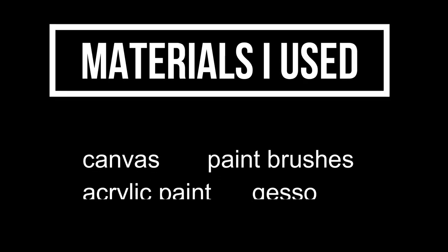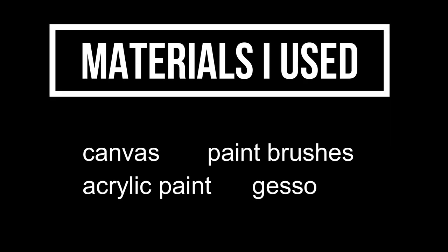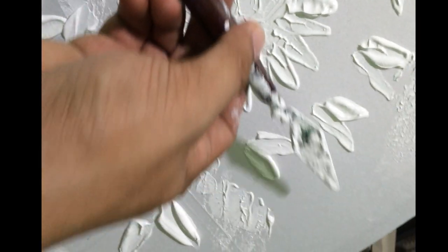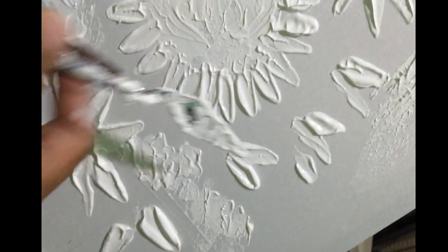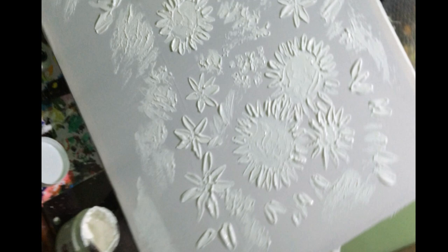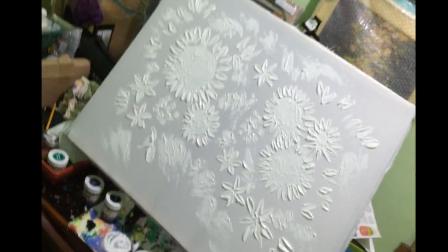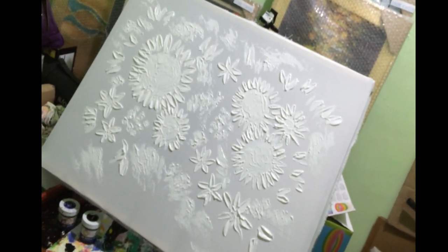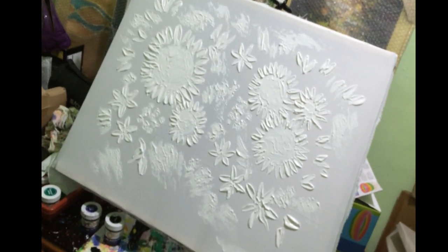Are you ready to create an expressionism art? Let's go! So, what were the materials I used? Of course, I used canvas, paint brushes, acrylic paint, and gesso. In my painting, I used gesso — what is gesso for? That is to add rich texture, so it's up to you if you're going to use it. But after you put it on your canvas, make sure that you dry it out.